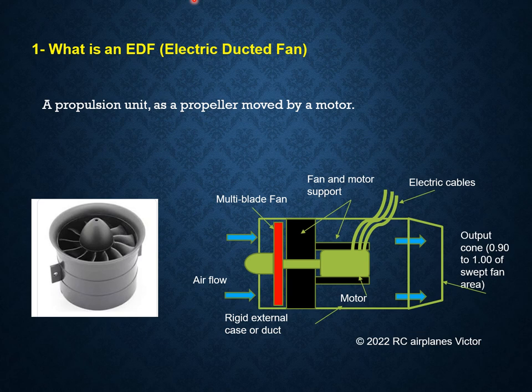An EDF is a fan placed inside a duct or external circular case. This arrangement provides a propulsion system like the traditional propeller, but all integrated in one smaller unit. In this schema we can see the multi-blade rotor that is rotated by the motor through the shaft. This produces a high velocity airflow which is responsible for the thrust produced by the EDF unit.